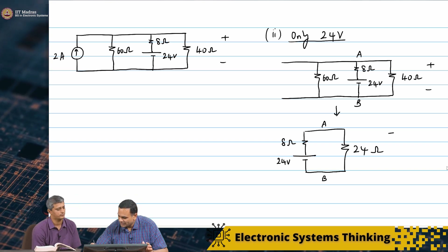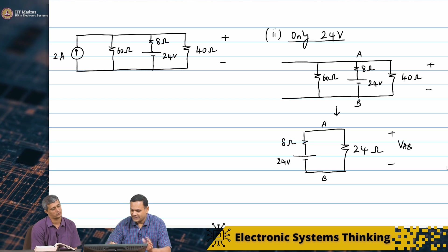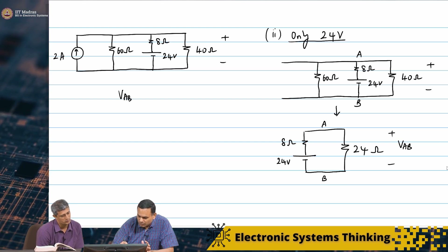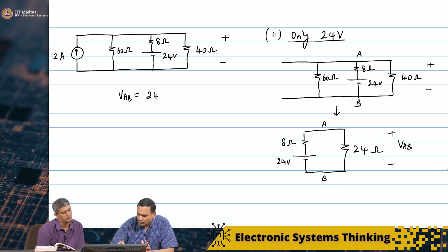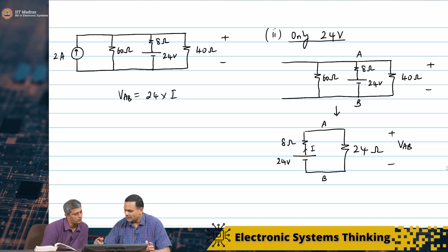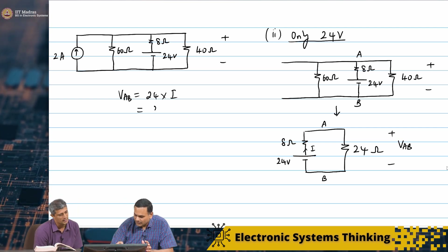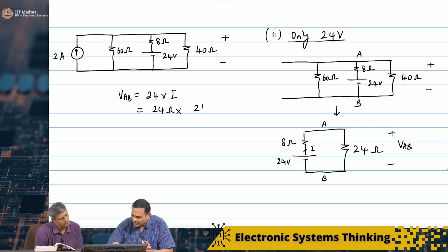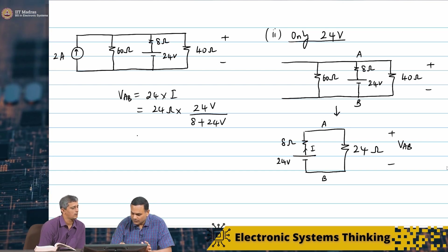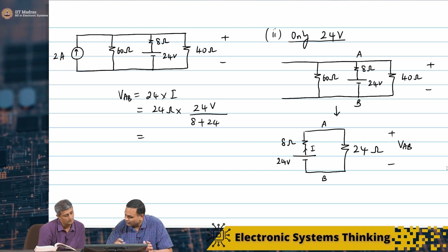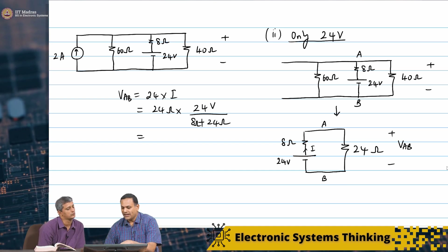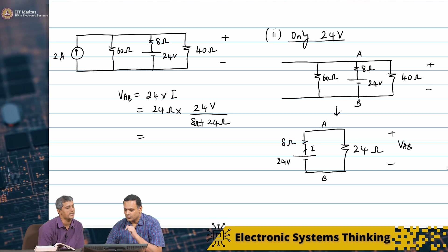We want to find VAB. The current I is 24 by 8 plus 24. So VAB2 is 24 ohms times I, which is 24 ohms times 24 volts by 32. That gives 24 by 32, which is 3 by 4. So VAB2 is 18 volts.